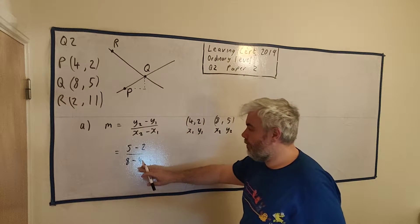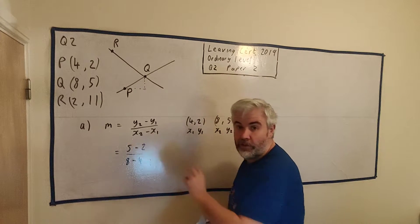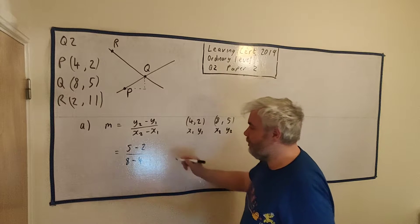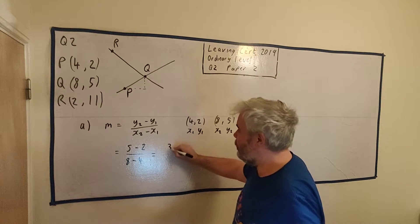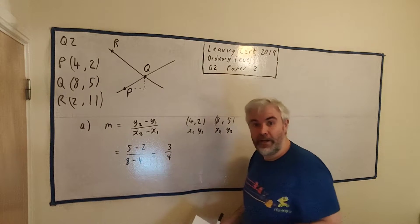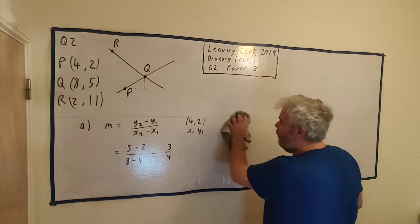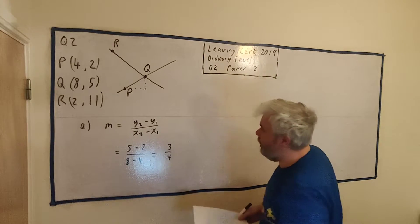Y2 is 5 minus Y1 is 2. X2 is 8 minus X1 is 4. You might have the other way around, 2 minus 5 and 4 minus 8. That's why it doesn't matter, because you get 3 over 4 or minus 3 divided by minus 4, which is also 3 over 4.